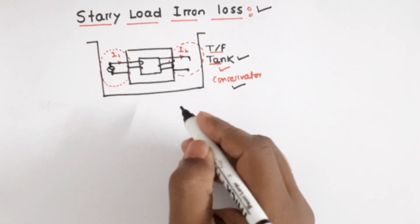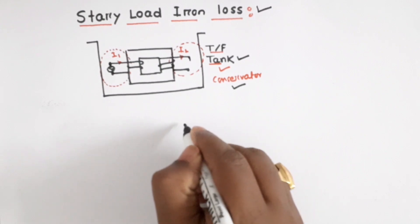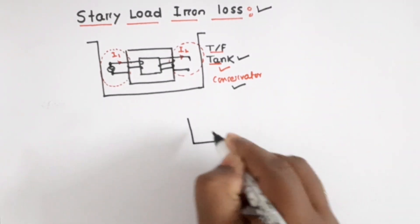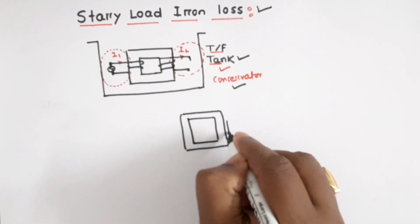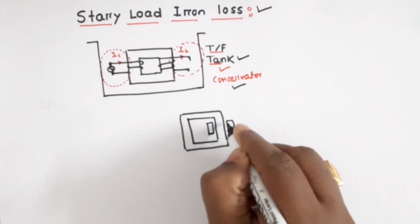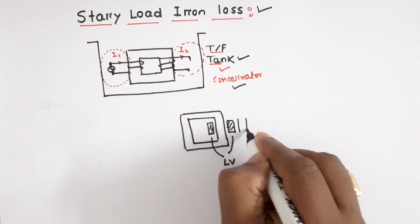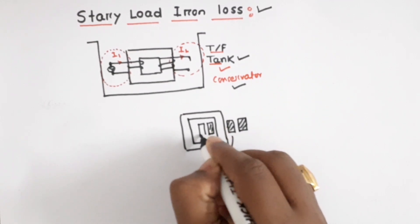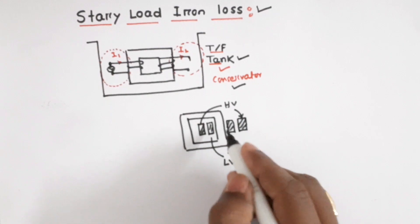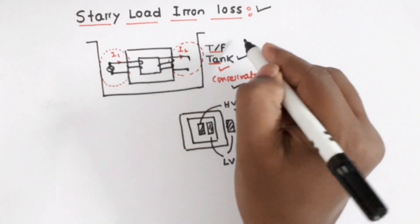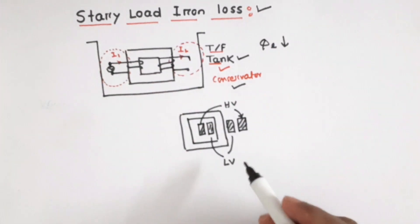To reduce the stray load iron loss in the core type transformer, an interleaved nature of winding is used. In the core type transformer, near the core we place the low voltage winding, and above the low voltage winding we place the high voltage winding. This is called interleaved nature of winding. Due to this interleaved winding, the leakage flux phi-L will be reduced, and therefore the stray load iron loss will also be reduced.